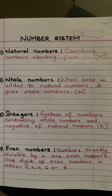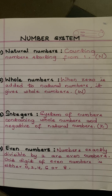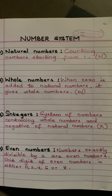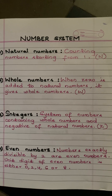So today, what is number system? Number system is a mathematical presentation of numbers of a given set. There are different types of number systems which I am going to show. First, what are natural numbers?